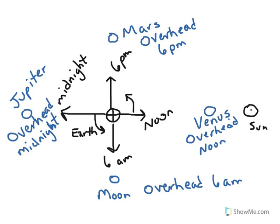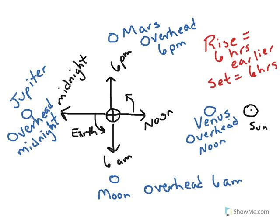Now that gives the overhead time. The general rule of thumb is that rise time is 6 hours earlier, set time is 6 hours later. So Venus being overhead at noon is going to rise at 6 a.m., set at 6 p.m.